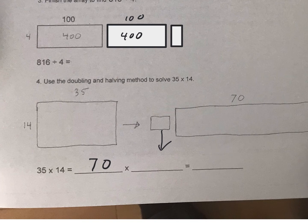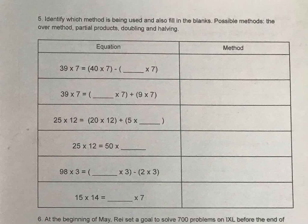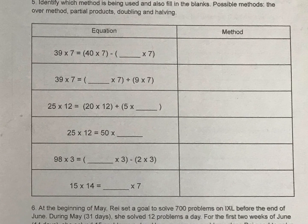If we add in the over method or partial products we have some other ways of doing multiplication. So look at this and see which method they're trying to do. Here we have 39 times 7, and they're going a little bit over 39 to 40. And then what would they subtract? They would subtract 1 because 40 minus 1 is 39. And that is the over method.